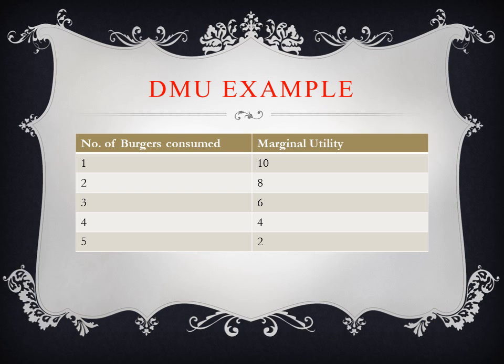Here we have an example of the law of diminishing marginal utility. If you look at the table, you will see that as the number of burgers consumed increases, the marginal utility of each additional burger decreases.